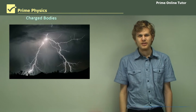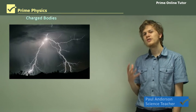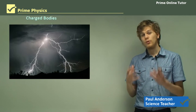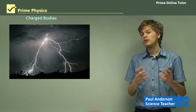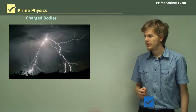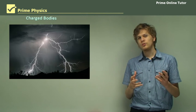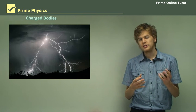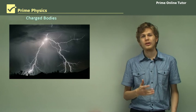Hi everyone. Today we're going to be learning about charged bodies — that is, bodies, objects, that have an electric charge on them. In particular, we're going to be talking about how we produce this electric charge by adding or losing electrons.